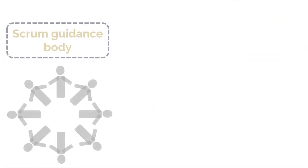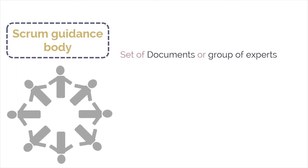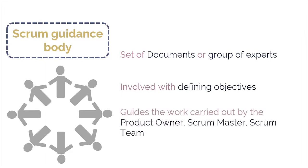Second is the Scrum guidance body, also referred to as the SGB. It is an optional role consisting of a set of documents or a group of experts typically involved in defining objectives related to quality, government regulations, security, and other key organizational parameters. The Scrum guidance body guides the work carried out by the product owner, Scrum master, and Scrum team.